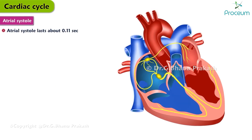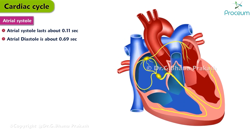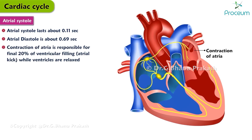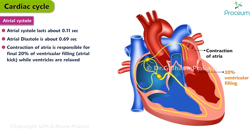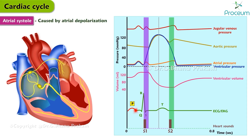Atrial systole lasts about 0.11 seconds and atrial diastole is about 0.69 seconds. Contraction of the atria is responsible for the final 20% of ventricular filling, called the atrial kick, while the ventricles are relaxed. Depolarization of the SA node causes atrial depolarization, marked by the P wave on the EKG, triggering atrial muscle contraction. As the atria contract, left atrial pressure increases, causing the A wave on the jugular venous pulse.